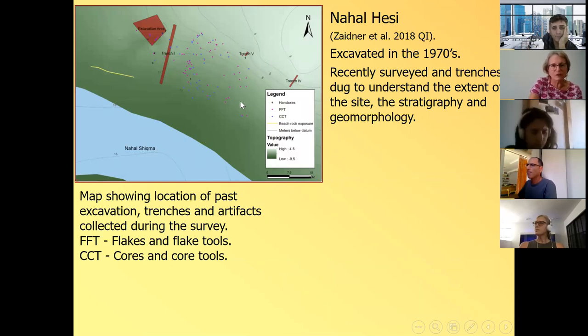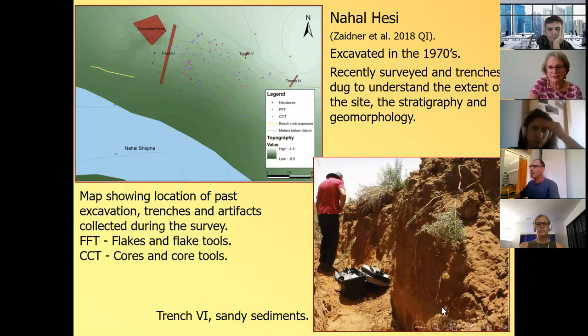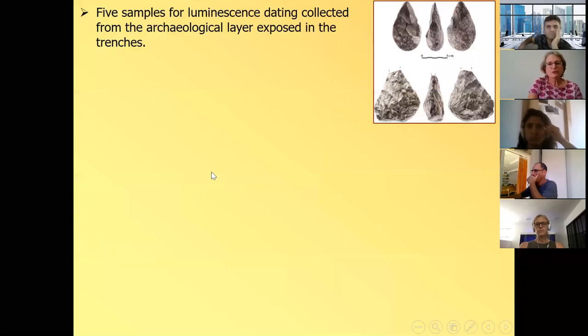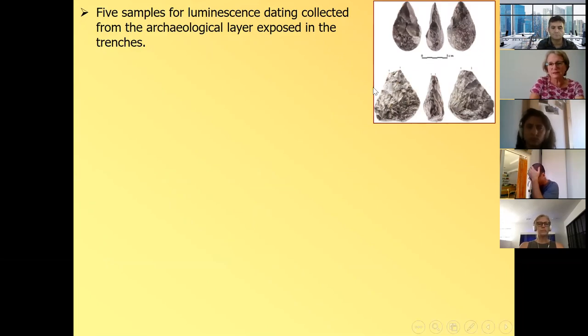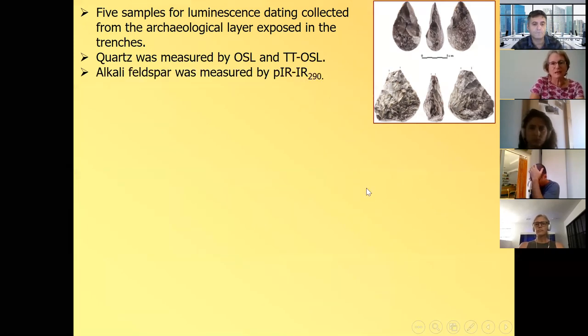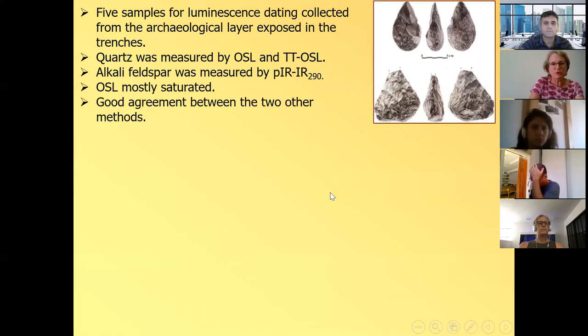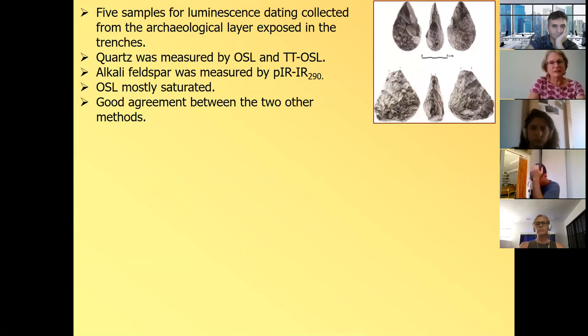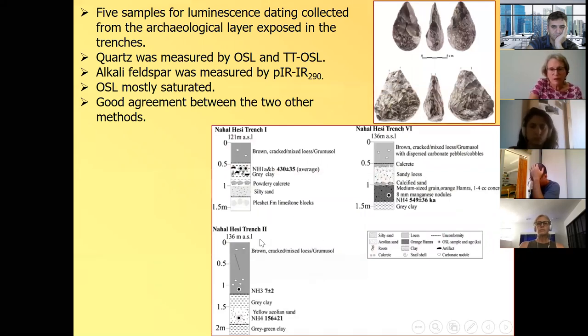And this is a map showing, this is the stream, Nachal Lachish. It doesn't have running water all year, you know, painting it in blue is a little bit of an illusion, but it's a stream. Here is the archaeological excavation from the 1970s and these are the trenches that were dug. And all these are finds that were found in the survey in the area. Flakes and flake tools, cores and core tools. And here's what one of the trenches looks like, reddish, brownish, sandy sediments. So we took five samples for luminescence dating from the archaeological layer that was exposed in the trenches. Here is some of the hand axes found in the trenches. And quartz was measured by OSL and by TTOSL and alkali feldspar was measured by post IR 290.